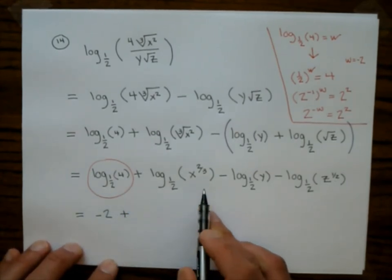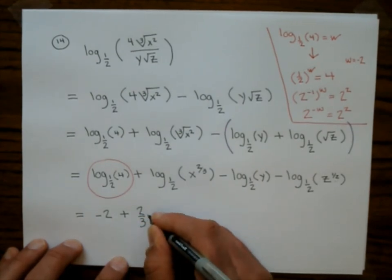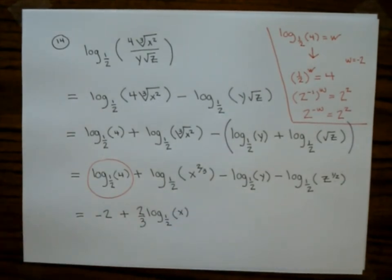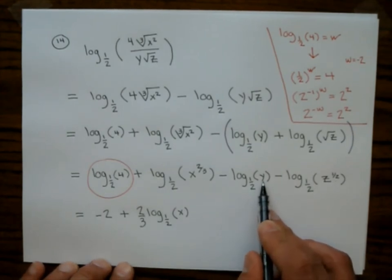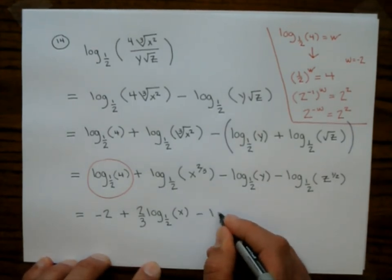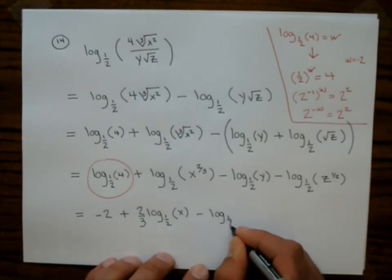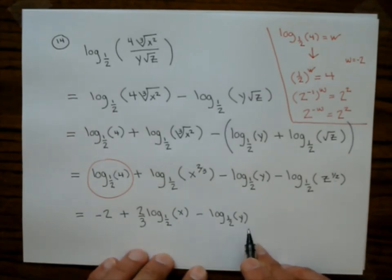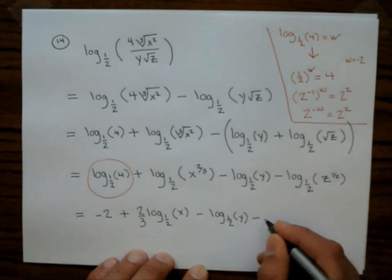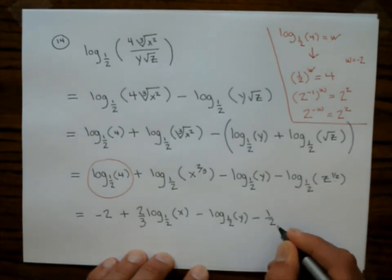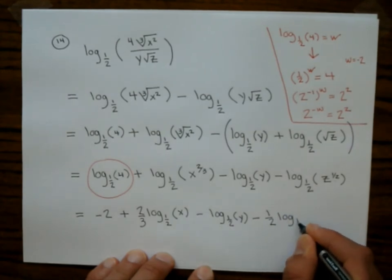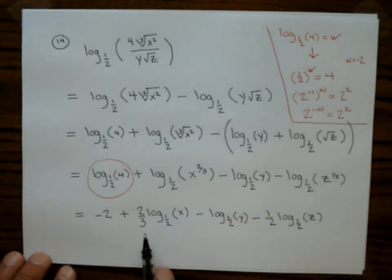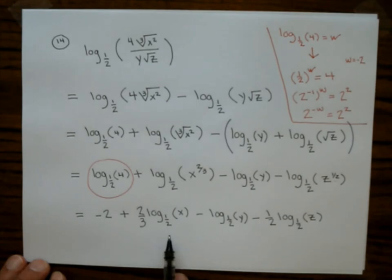Using the power rule, the 2/3 jumps out in front, giving −2 plus 2/3 log base 1/2 of x. For y there's nothing more to do, so it's minus log base 1/2 of y. For z, the 1/2 jumps out front: minus 1/2 times log base 1/2 of z. There's nothing more we can do to expand any of the logarithms, so that's our answer.